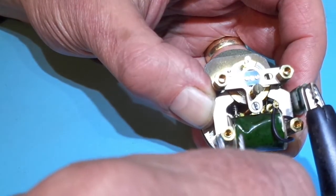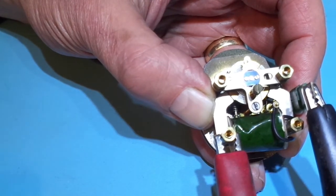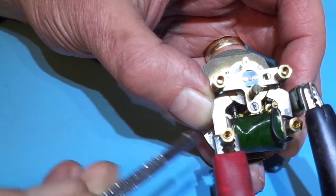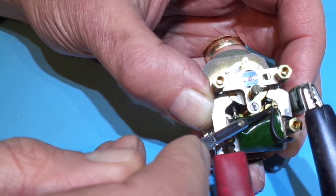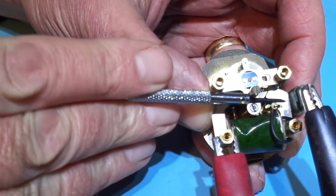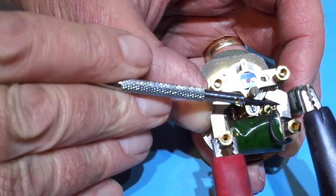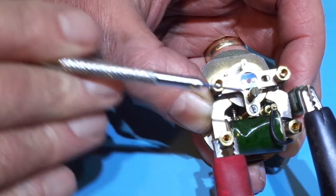It's a positive earth clock, so I'm connecting the red terminal to the body of the clock, and then I'm going to just short this pin here to the body of the clock using a screwdriver, as you can see. And you can see when I do that, I get some movement on the balance wheel. As long as you see that, then the solenoid is fine.